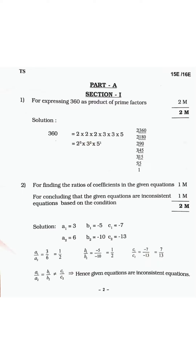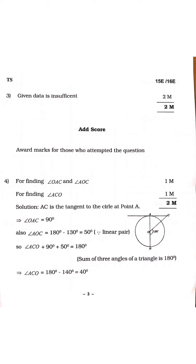For Question 2 — finding the ratios of coefficients in the given equation — for finding the ratios you will get one mark, and for concluding that the given equations are inconsistent, if you are proving it as inconsistent you will get one mark. Like this you will get two marks for this problem.